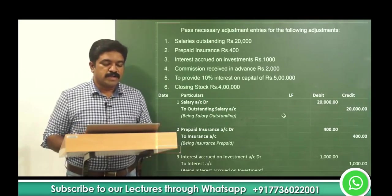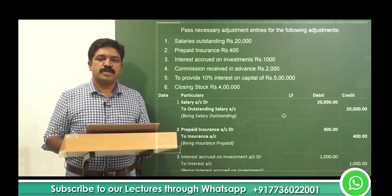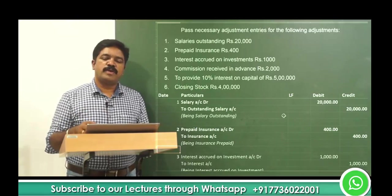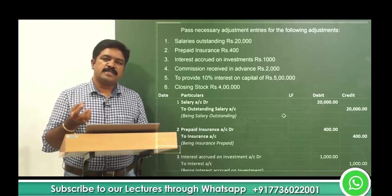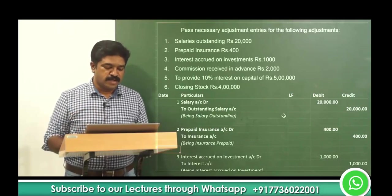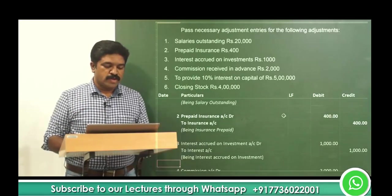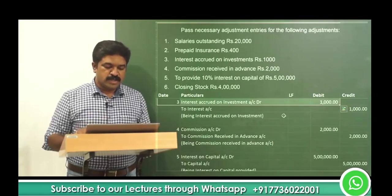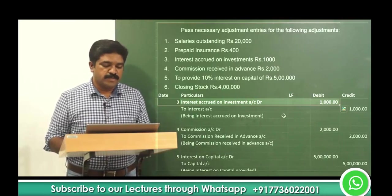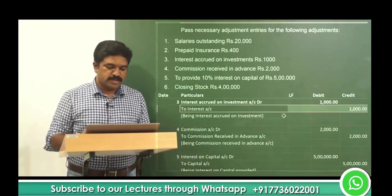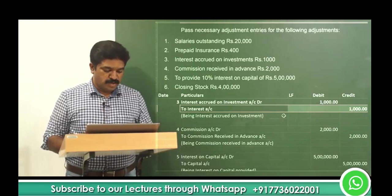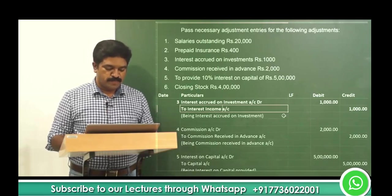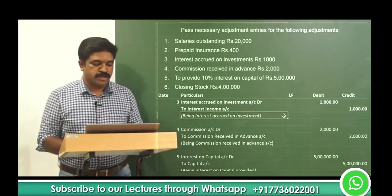Third item is interest accrued on investment — 1,000. Interest accrued income will become an asset, so the asset should be debited. And this interest is an income, so it should be created. Entry: Interest accrued on investment account debited 1,000, and credit goes to interest income account — being interest accrued on investment.